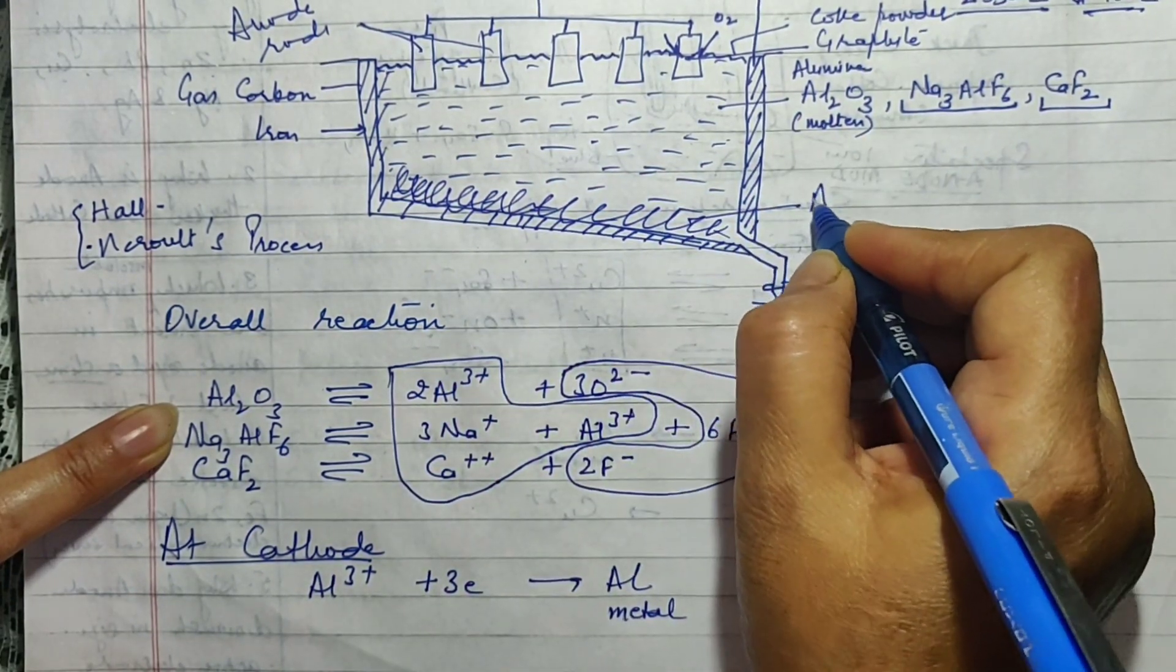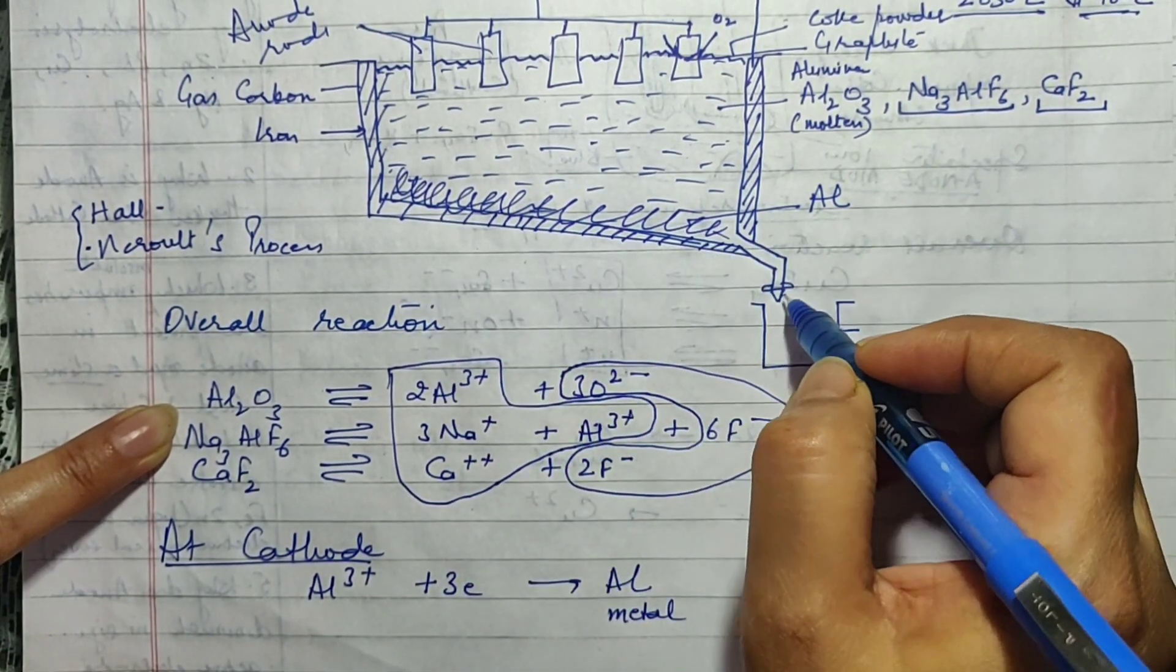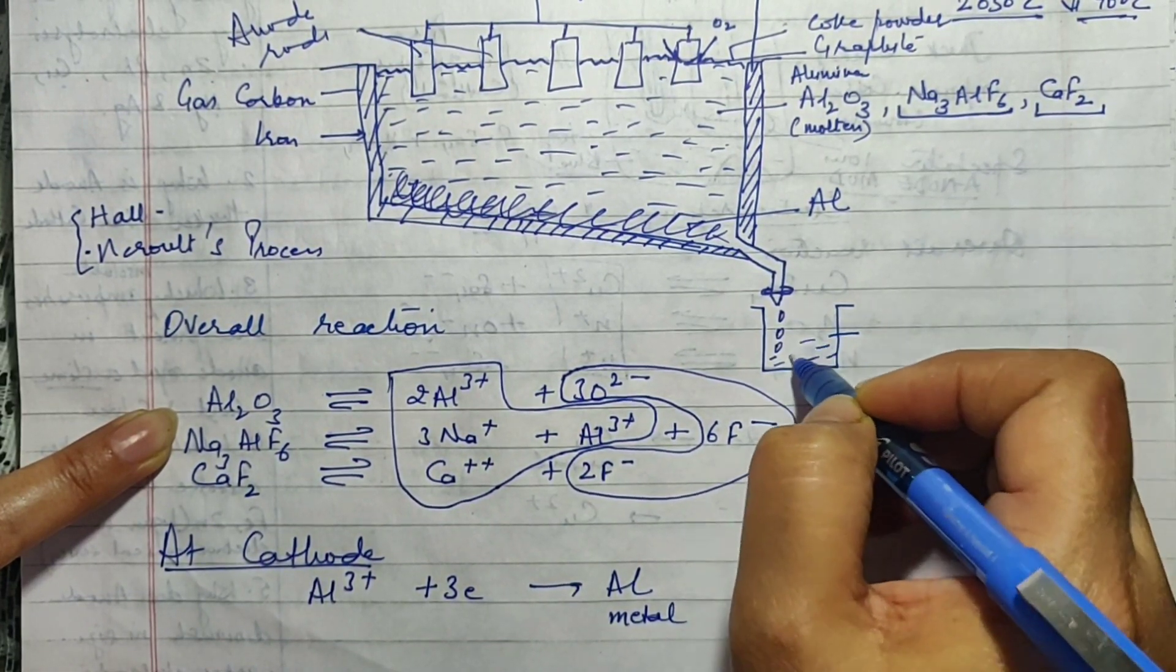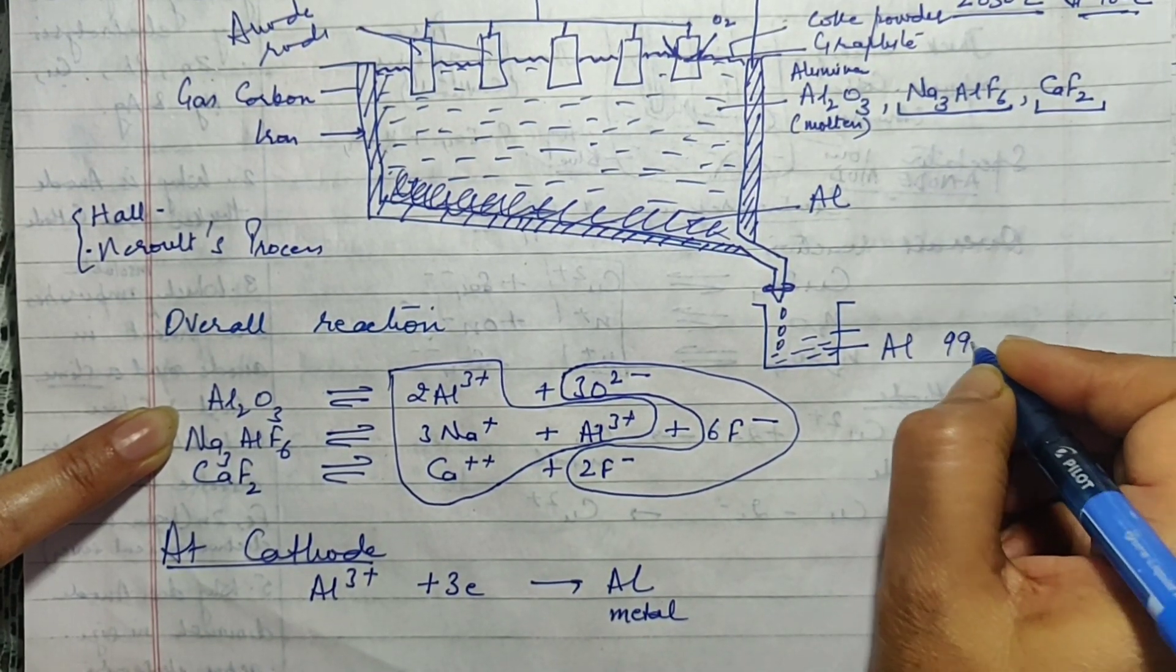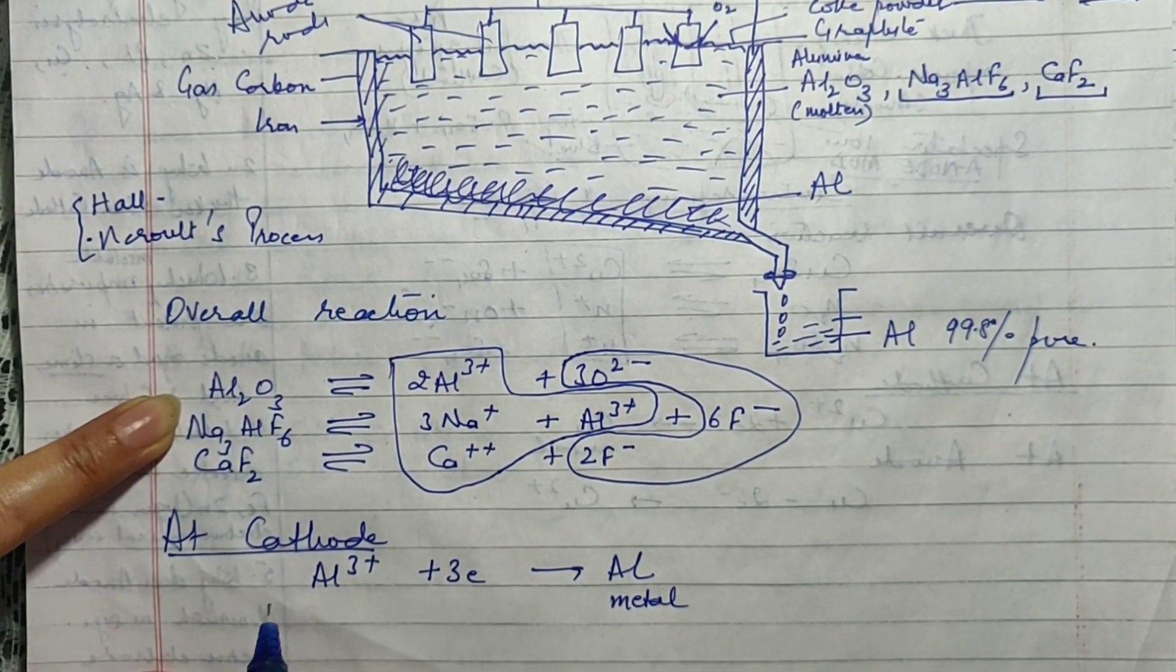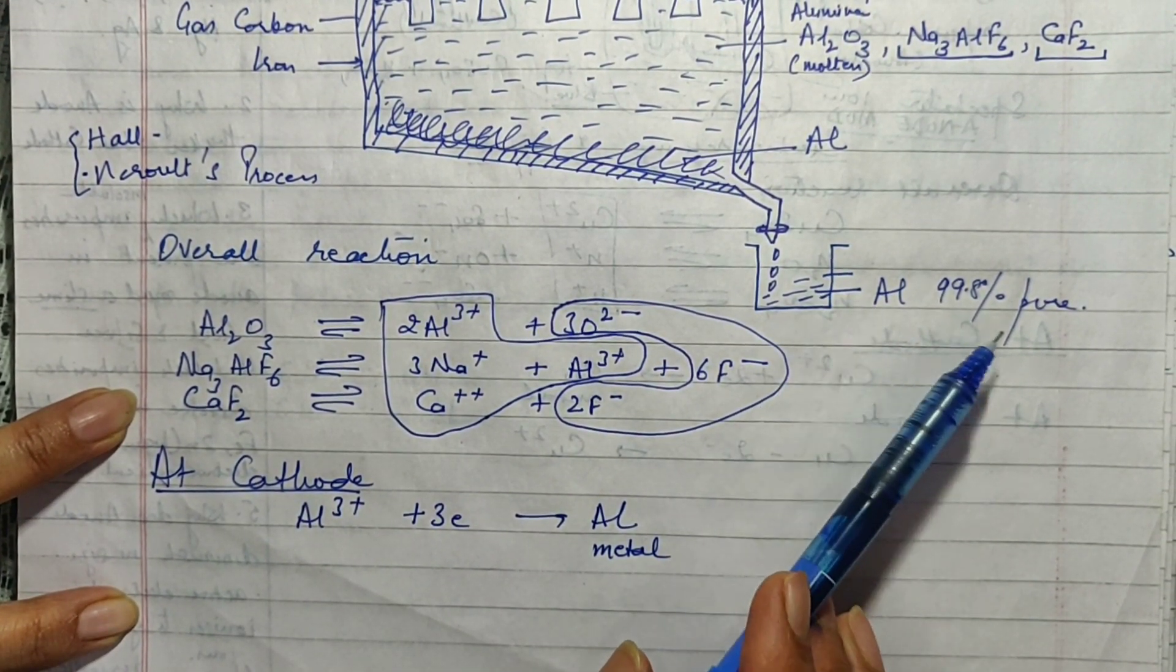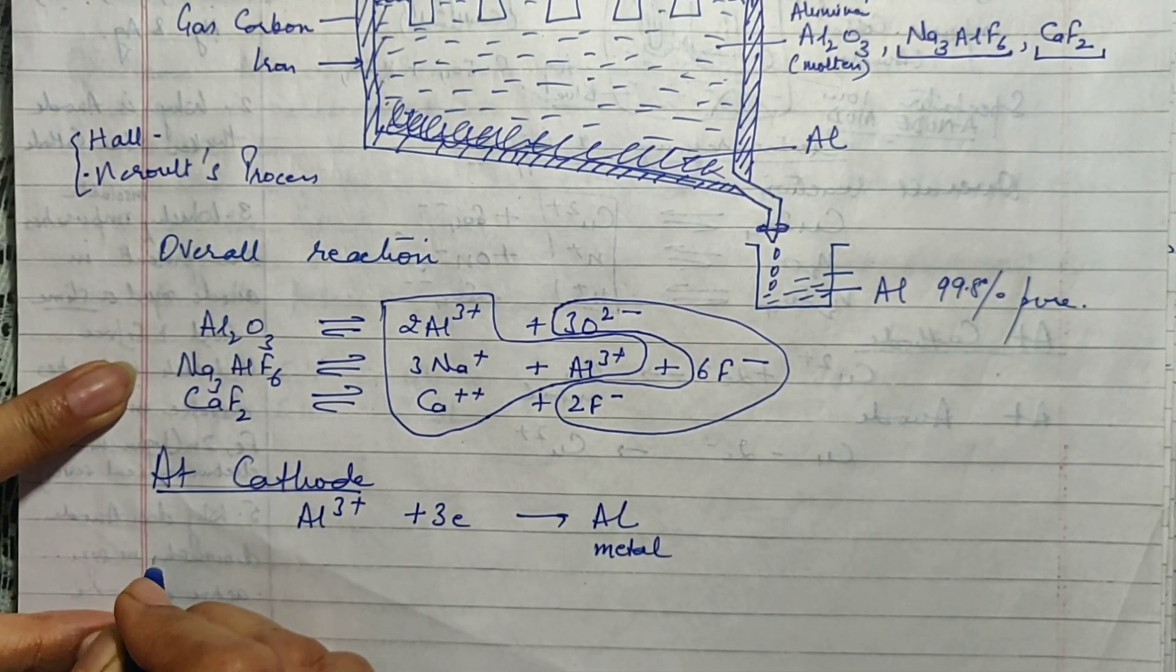This is the aluminium which is obtained after the process goes on for a while. And that is why the bottom is kept slanting, there is a control over here, you can open this tab and then the molten aluminium will keep falling down over here. Now this aluminium which is obtained is absolutely about 99.8% pure. It is a very very pure form of aluminium. And if it is not required for a very strategic purpose, we use most of the aluminium like this only without any purification or refining.